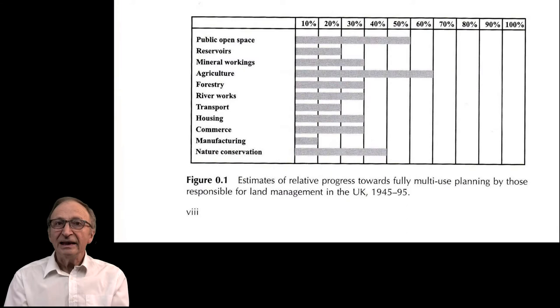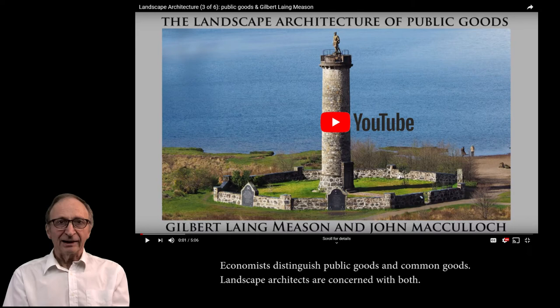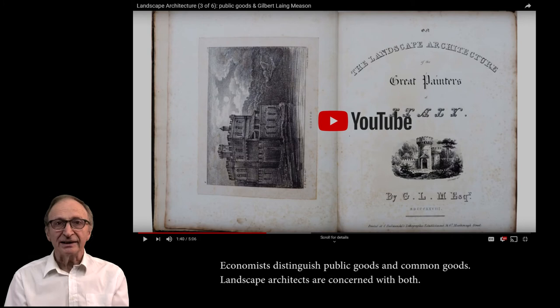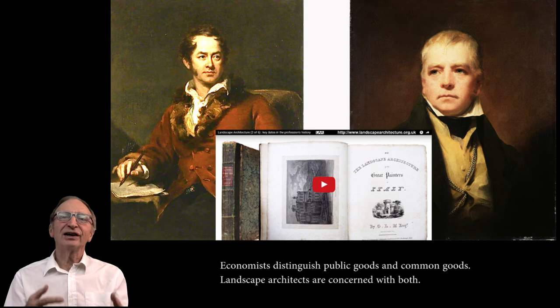The people and themes underlying my approach are clearer to me now than when the book was published. Here's a short summary of them. First, the belief that landscape architecture has a special concern with public goods comes from Gilbert Lang Meason, who, in the first book on landscape architecture, quoted from a letter to Sir Walter Scott that 'the public at large has a claim over the architecture of a country — it is common property.'